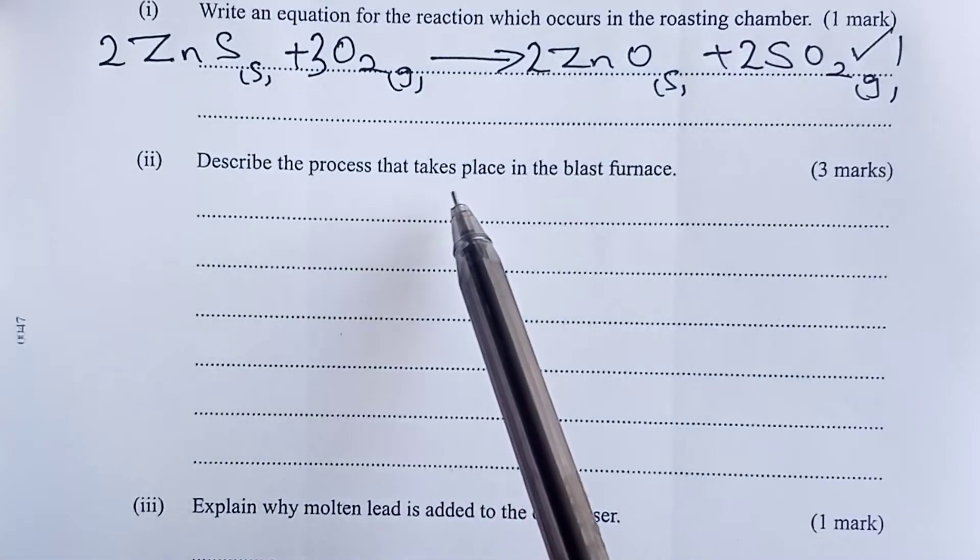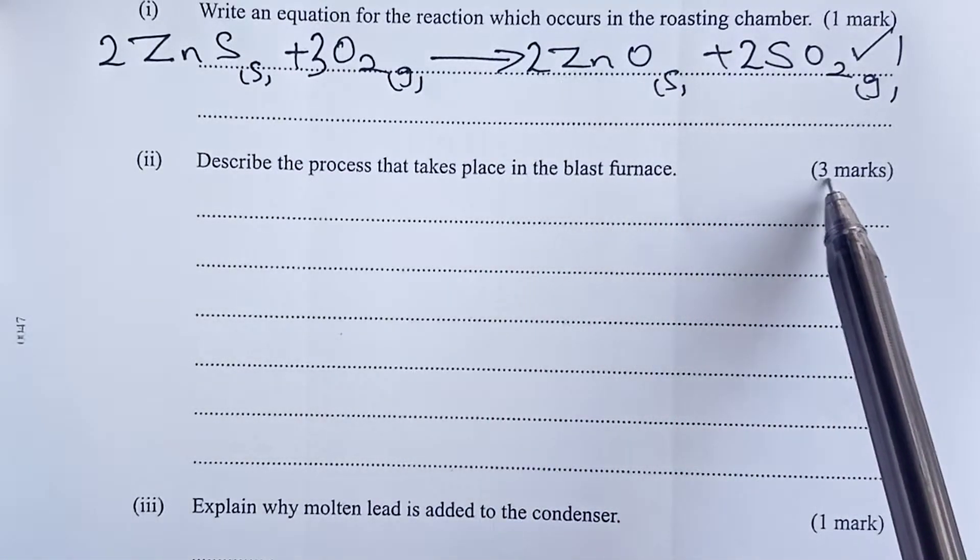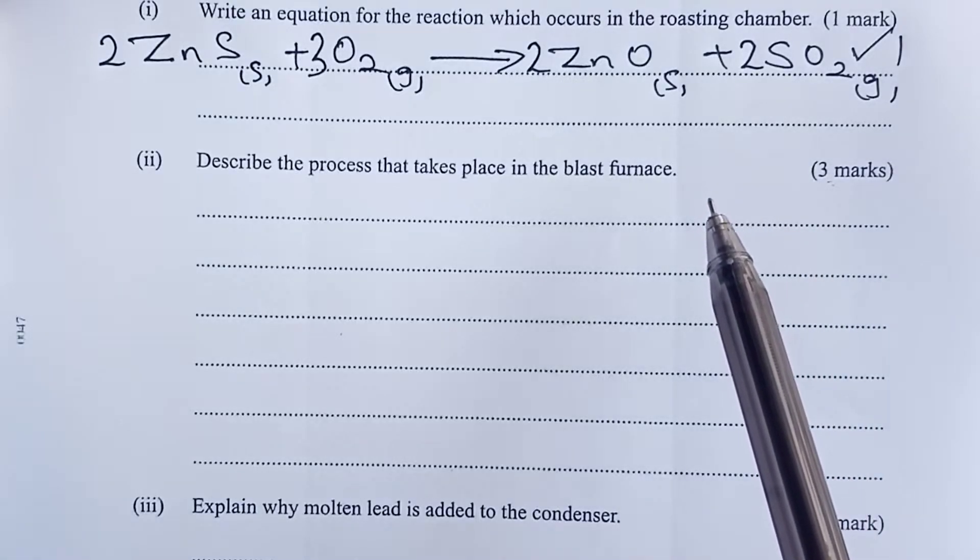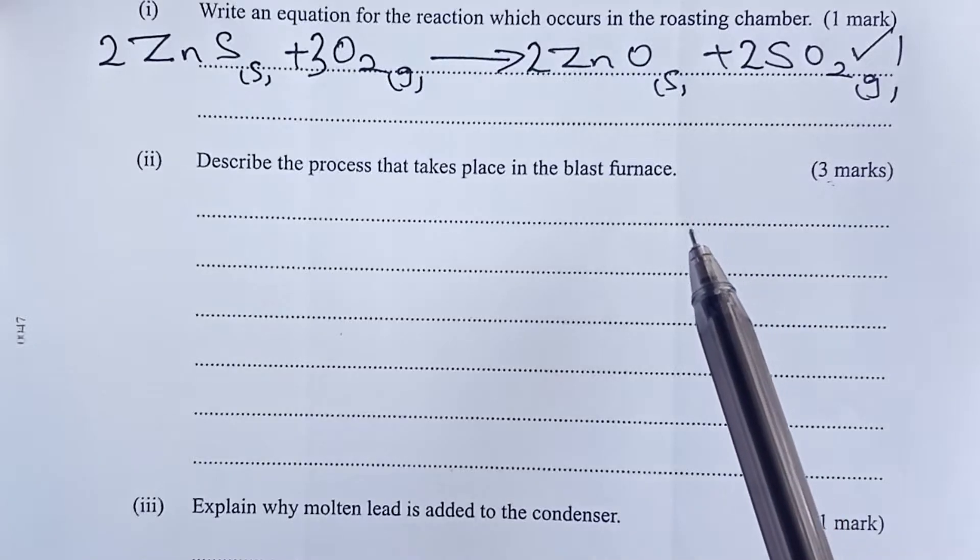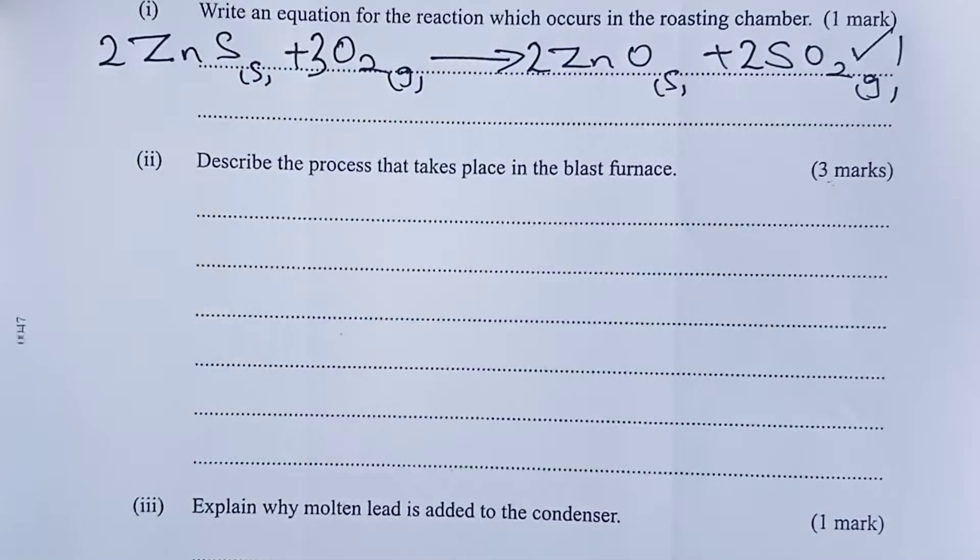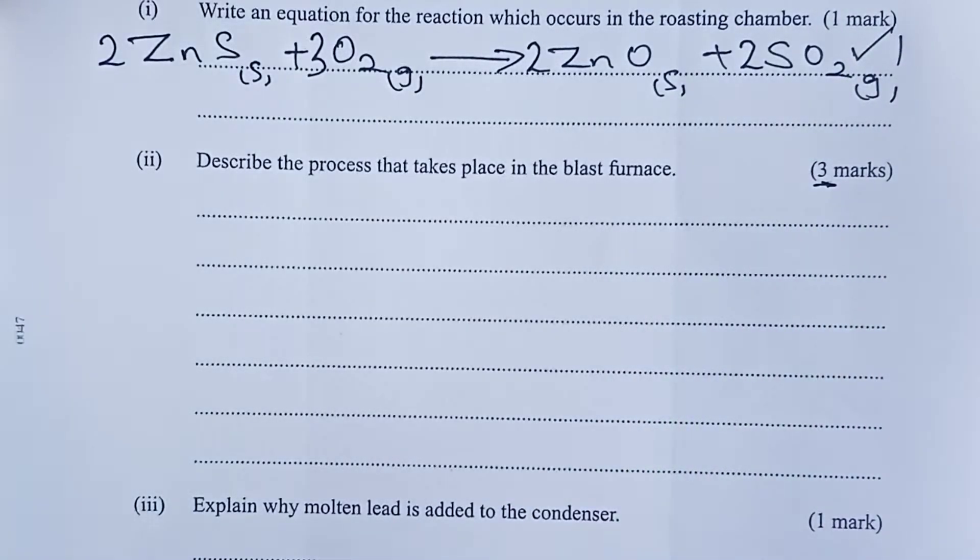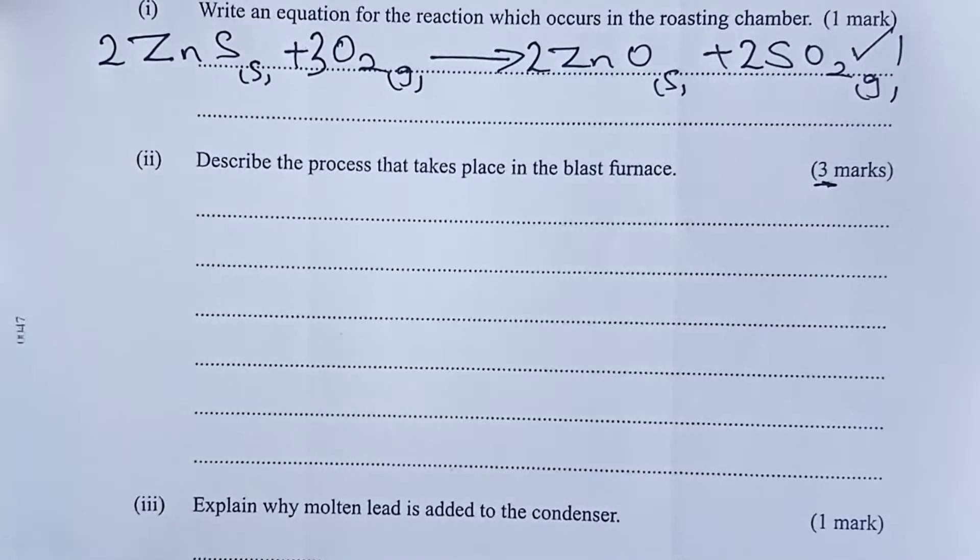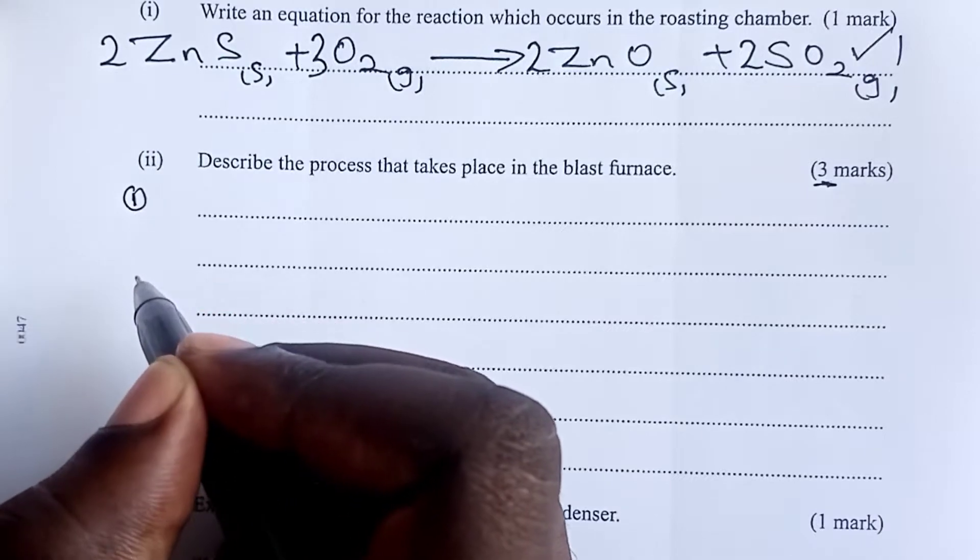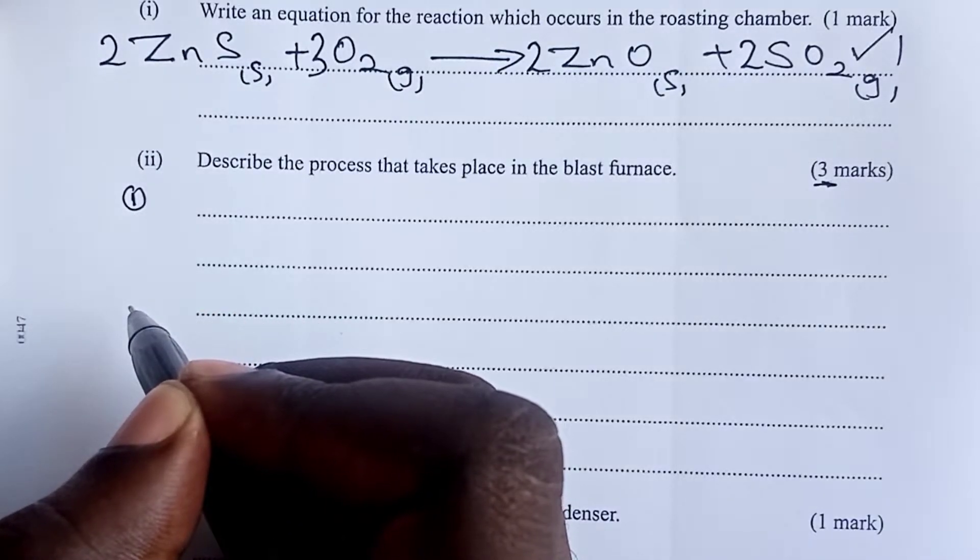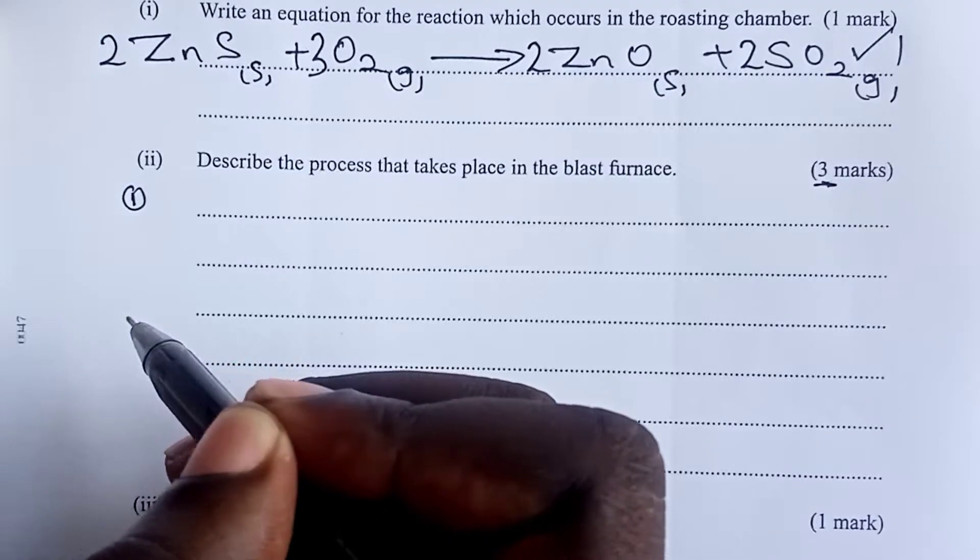Next question, describe the process that takes place in the blast furnace for three marks. Students, the processes that take place in the blast furnace are so many. I have about seven, but for this part, because of three marks, a student was supposed to just mention three for one mark each. So let us go through the seven processes to help us in doing our revision.